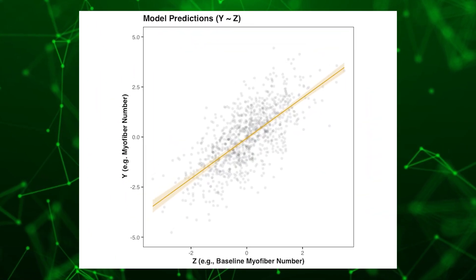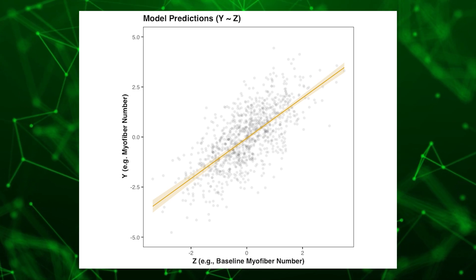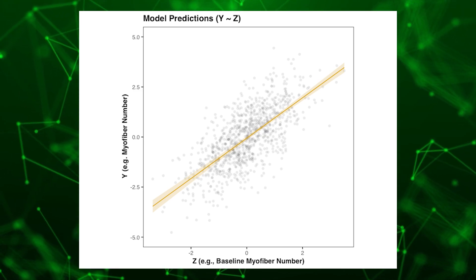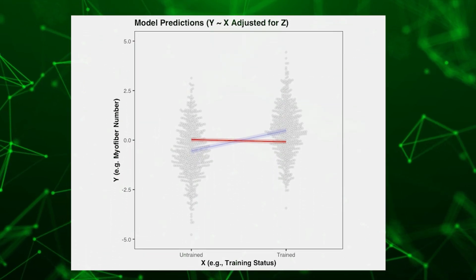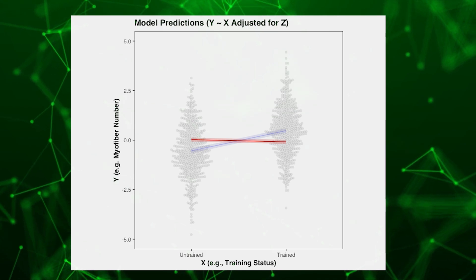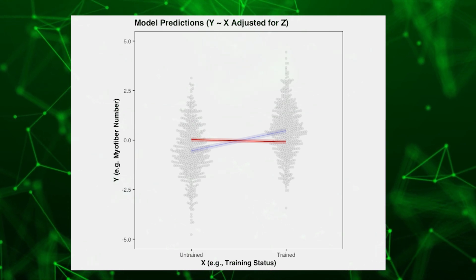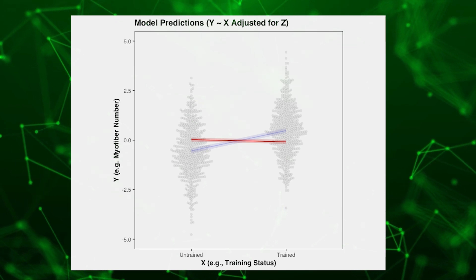I've also simulated the confounding variable Z, which we can call baseline myofiber number, which has a very strong positive relationship with the myofiber number observed in the study. After we adjust for the influence of Z — baseline myofiber number — the relationship between X and Y disappears entirely, showing a slight negative relationship, which we know is closer to the true effect since I simulated the data. The important thing here is that confounding variables aren't just noise making the patterns we seek to detect weaker — they can entirely deceive us.